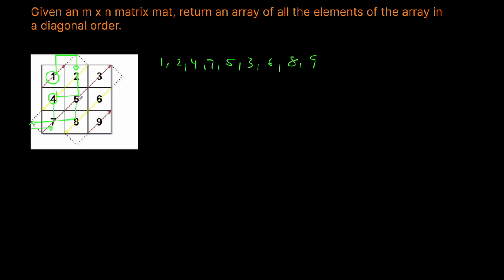So going up, we go right and up — right and up, right and up. But now our row and column are both invalid, so we need to drop the rows by two and the column to the left by one. Then going down and left, we're again in an invalid location, so we need to add two to the columns and one to the row to get back to the correct space. And at nine, we actually finish because we'll have processed all the elements.